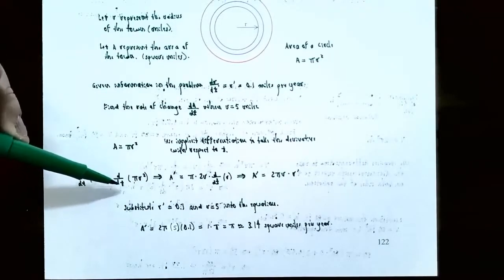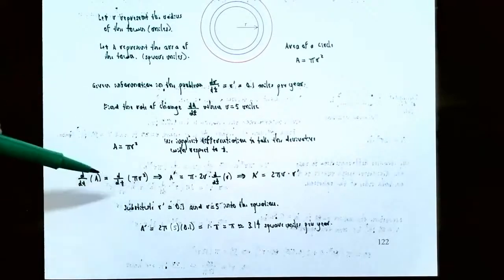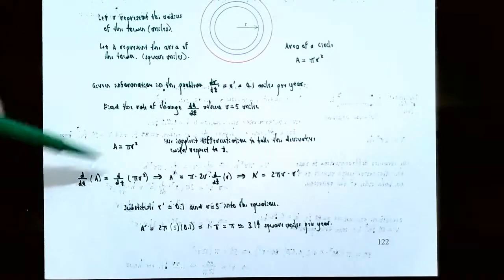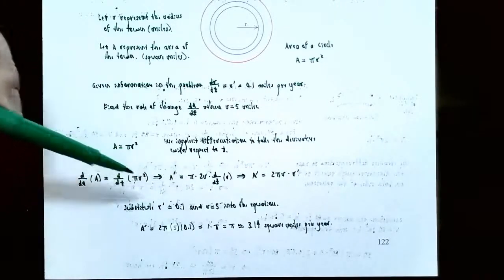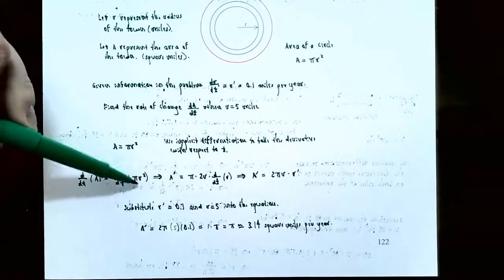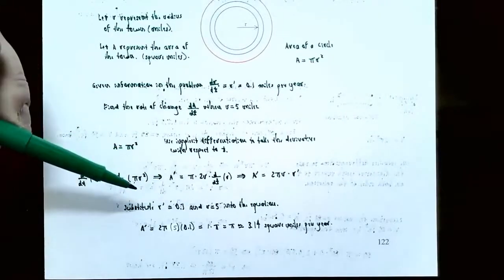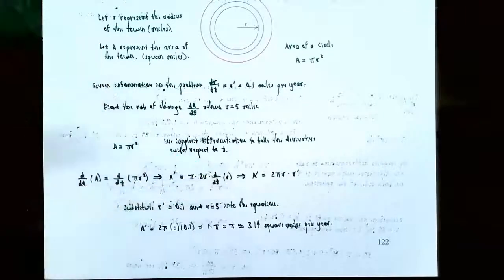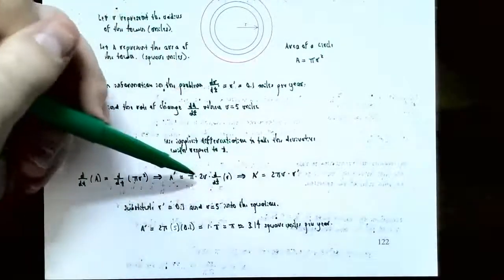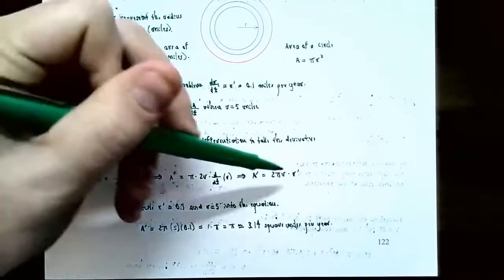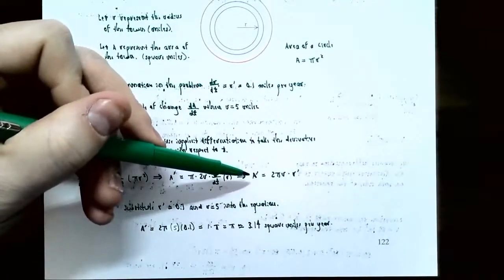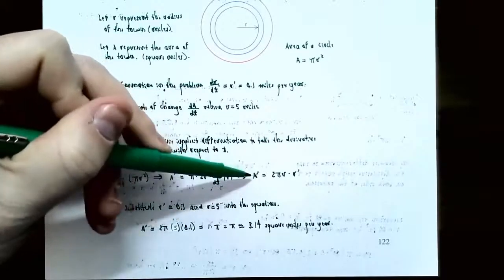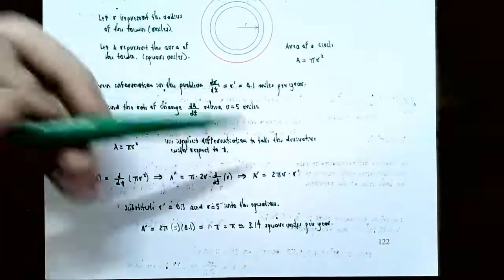Taking the derivative of both sides: the derivative of A is A prime. Pi is the coefficient and stays. The derivative of r squared using the chain rule gives 2r times the derivative of r with respect to time, which is r prime. So A prime equals 2 pi r times r prime. This formula relates the related rate for area with the related rate of the radius.